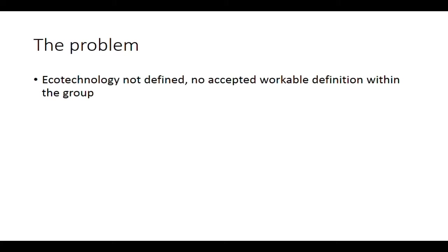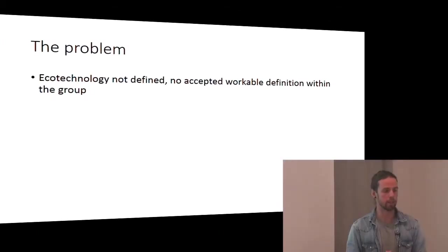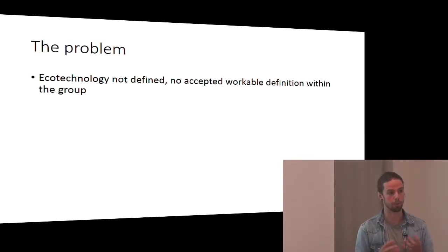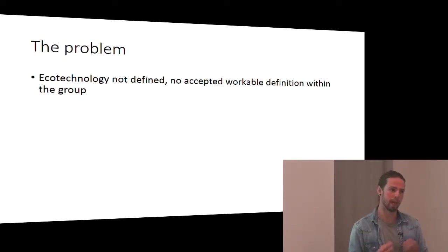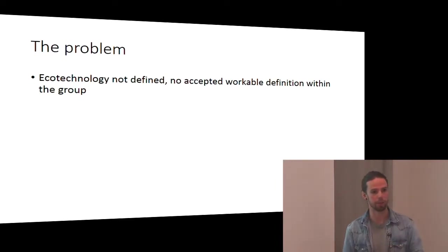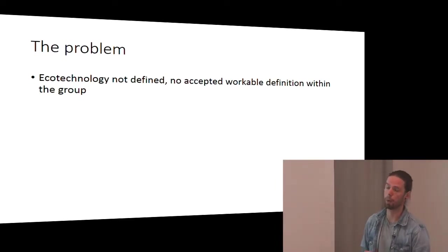The overall aim is to identify and test ecotechnologies for reducing emissions by turning nutrients and carbon into benefits. The problem for us was that this term ecotechnology wasn't really defined. The term was in the call, we used it a lot in our grant application, but after we started, we realized there wasn't really an accepted definition of what ecotechnology means. As we started off with a systematic map within this project, it was really crucial to establish a strong search strategy and inclusion criteria. And without acceptable definitions, this is where you really hit problems.